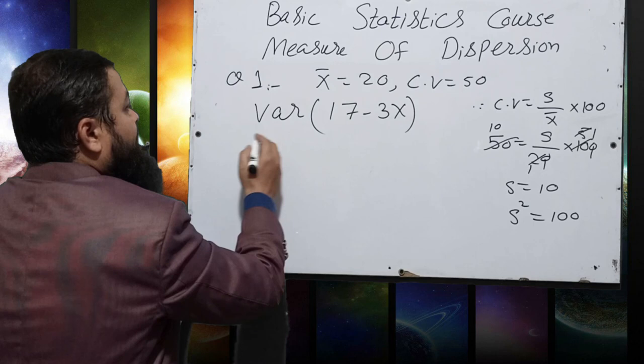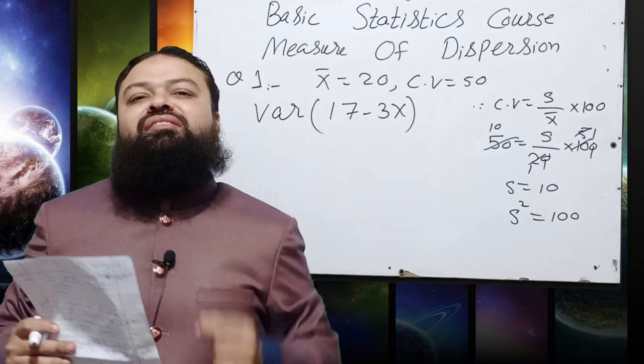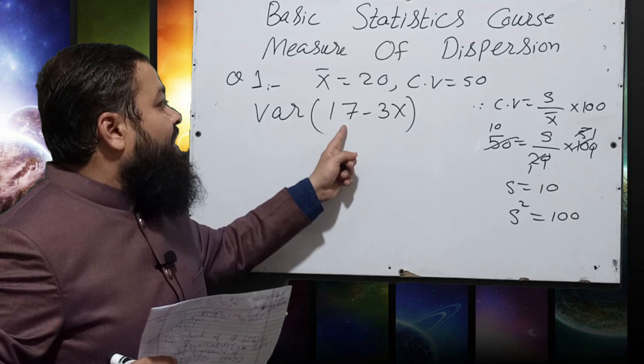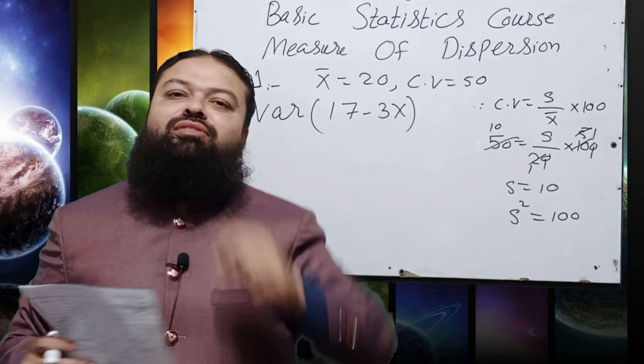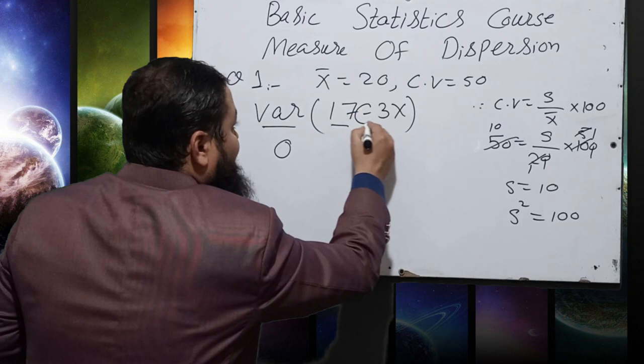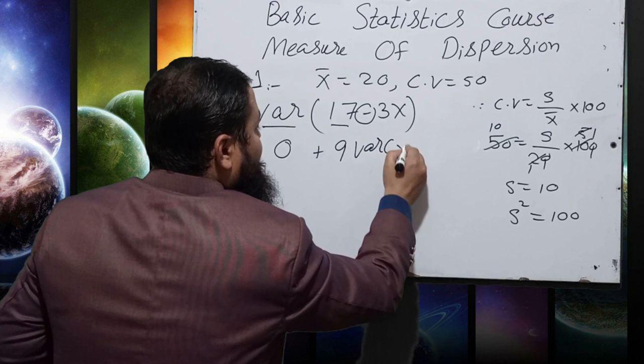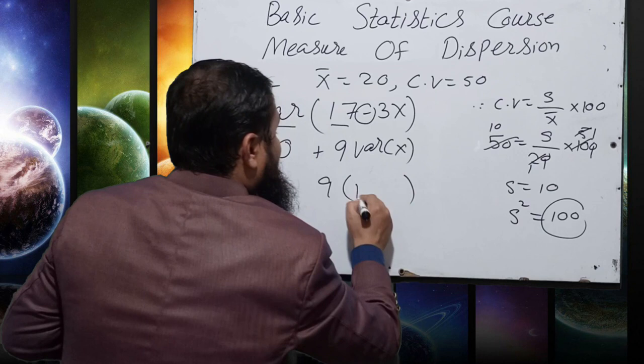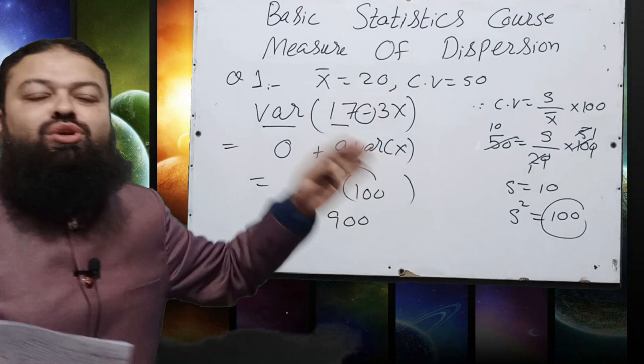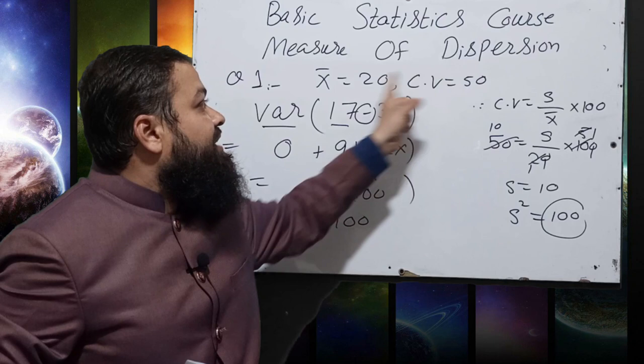Now applying variance to (17 − 3X): variance of a constant is 0, so variance of 17 is 0, and the minus becomes plus. We get 3² × Var(X) = 9 × 100 = 900. A dozen questions can be generated from this concept — when CV and x̄ are given, first calculate standard deviation and variance, then find the answer.